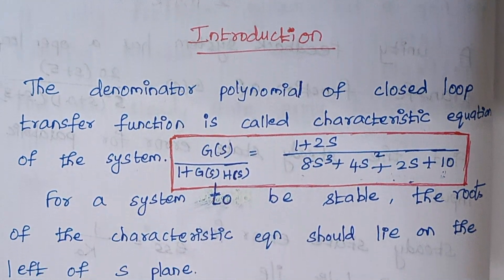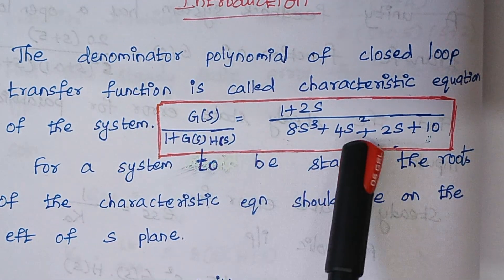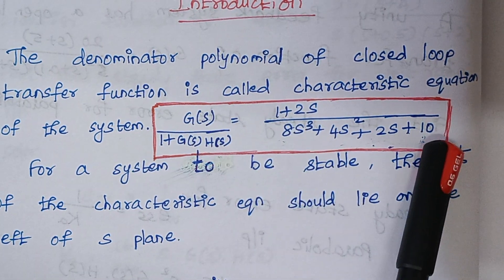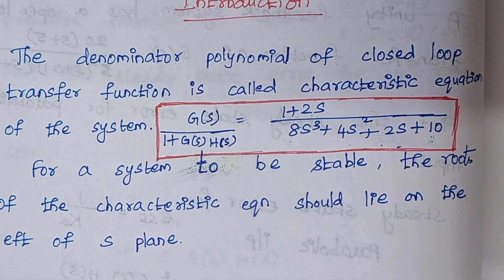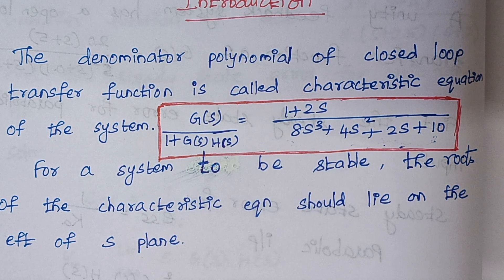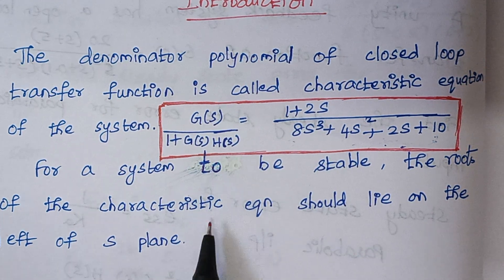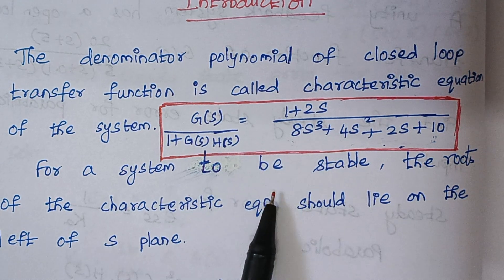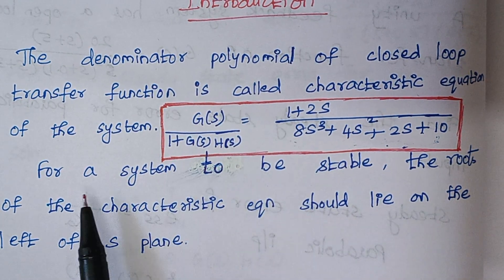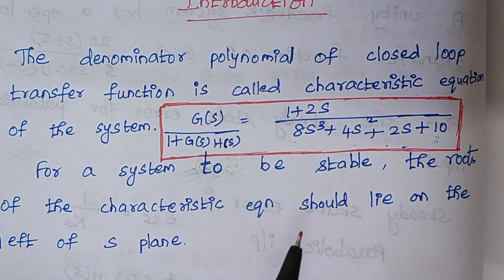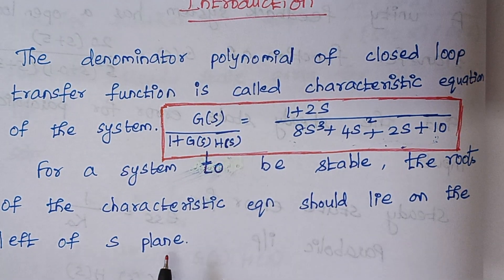So the next thing is from the characteristic equation, we are going to tell whether a system is stable or not. So how we can tell that, you just see here for a system to be stable, the roots of the characteristic equation should lie on the left of the S plane.